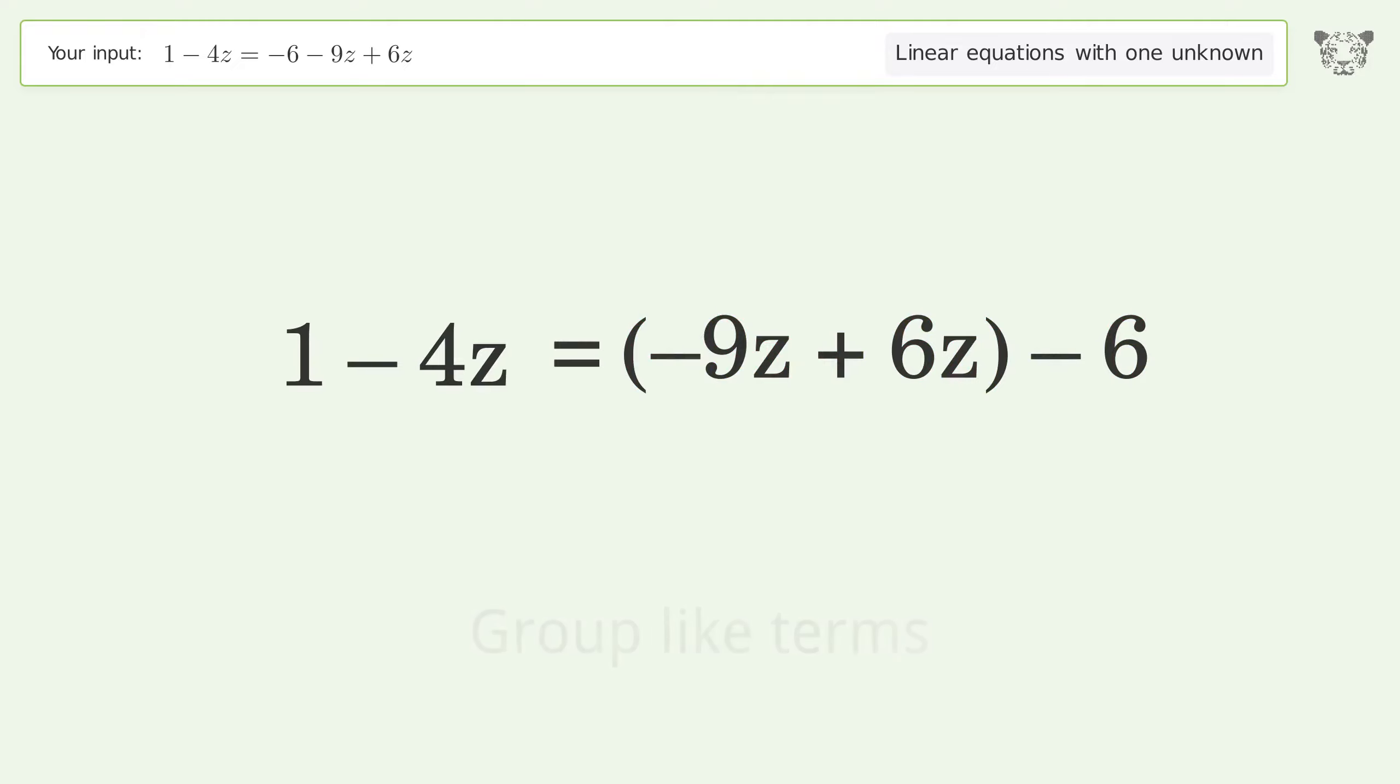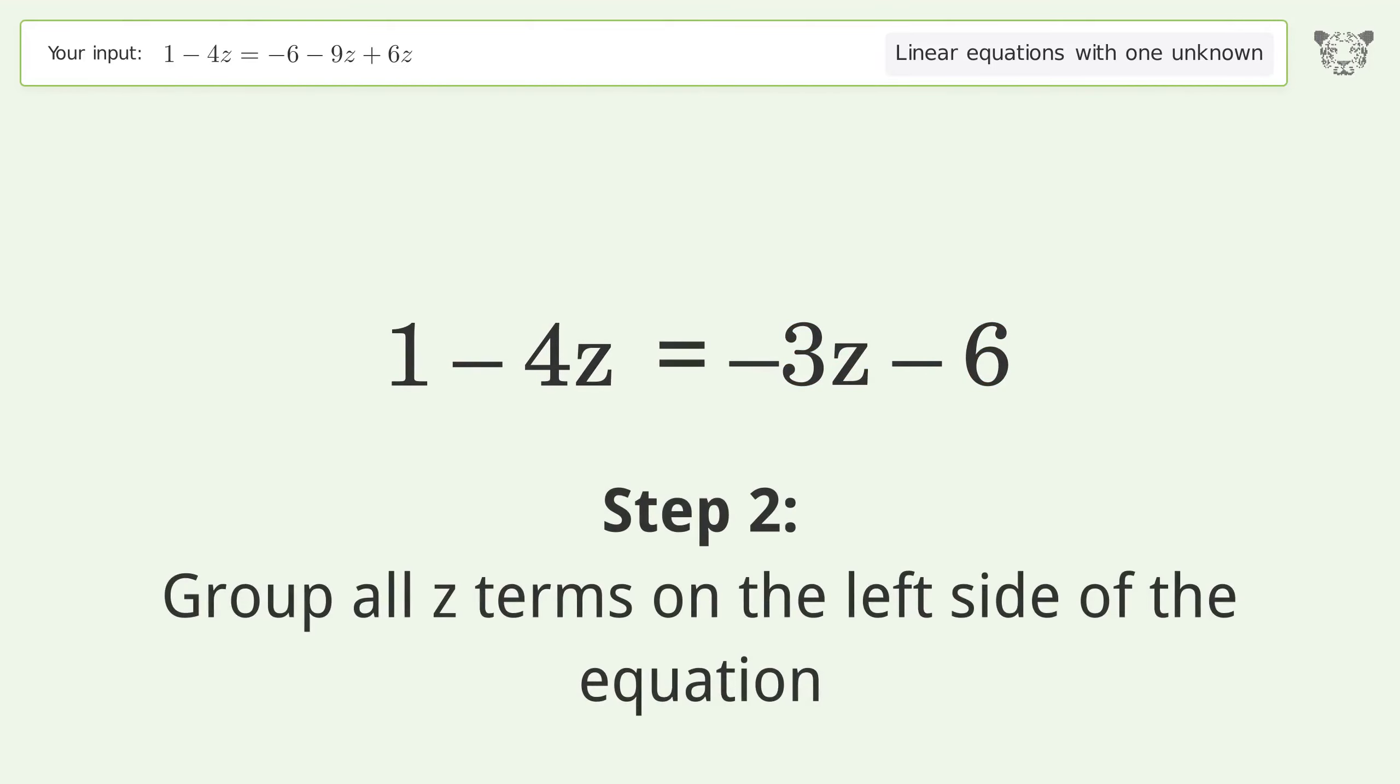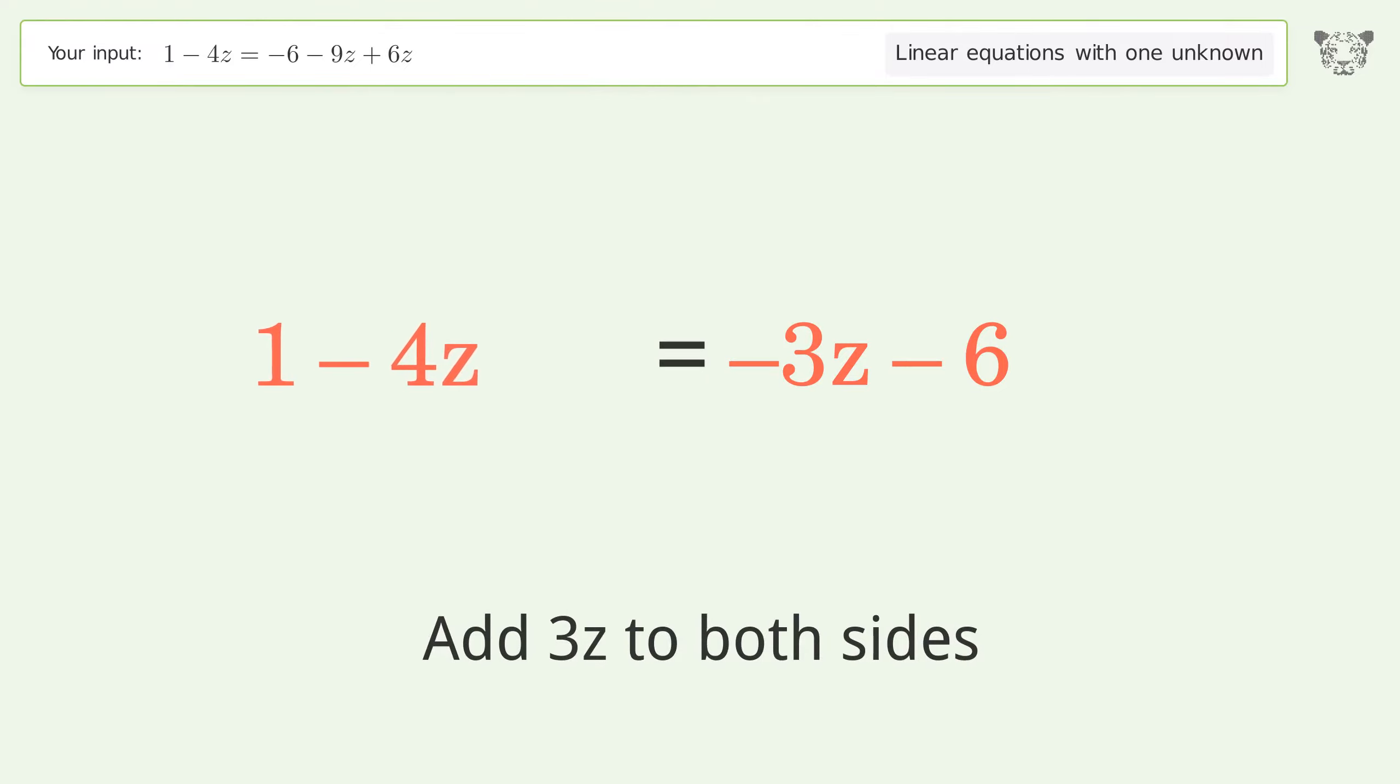Simplify the expression. Group like terms. Simplify the arithmetic. Group all z terms on the left side of the equation. Add 3z to both sides.